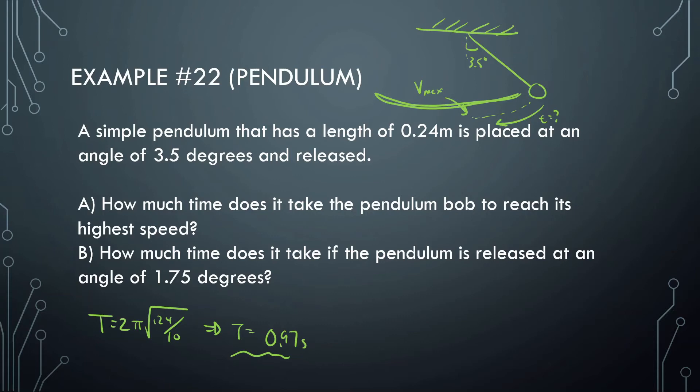This T here is just going to be one-fourth because this is one-fourth the journey, then another fourth to get to the other side, and then another fourth to get back, and then another fourth to get all the way back. This is one-fourth of the period: 0.97 divided by 4, which gives us time of 0.24 seconds.